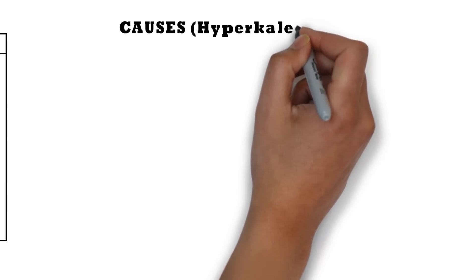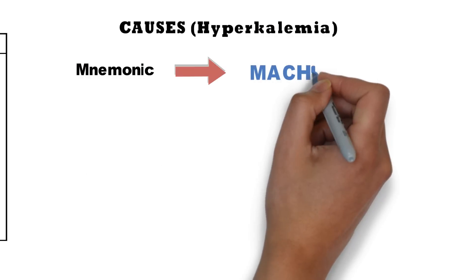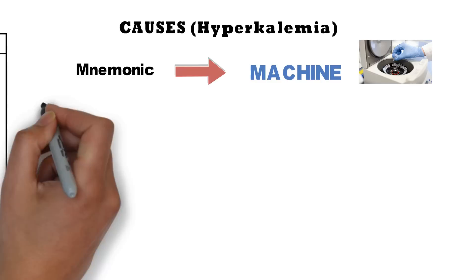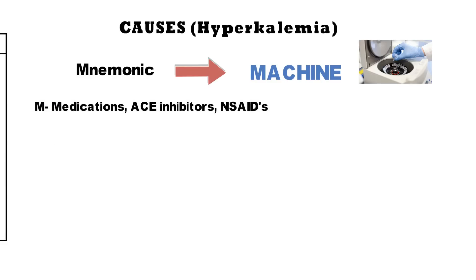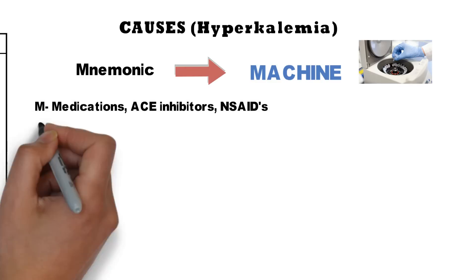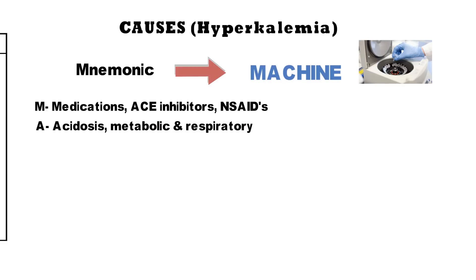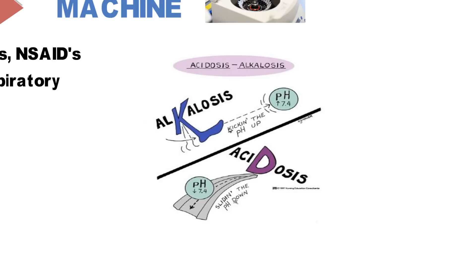Coming on to the causes of hyperkalemia, remembered by the mnemonic MACHINE — as a machine which calculates potassium has calculated increased potassium. M stands for medication, such as ACE inhibitors or NSAIDs. A stands for acidosis — metabolic or respiratory. This is the most frequently asked question in medical entrance examinations. Keep this diagram in mind: potassium in alkalosis kicks up pH, whereas in acidosis it slides the pH down.